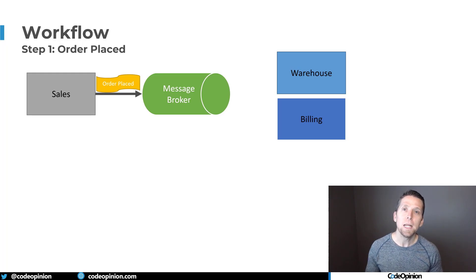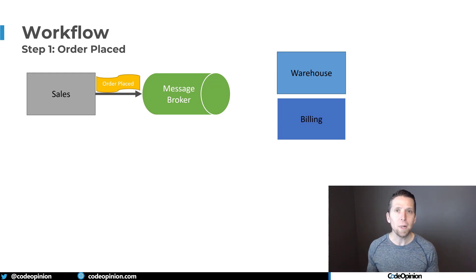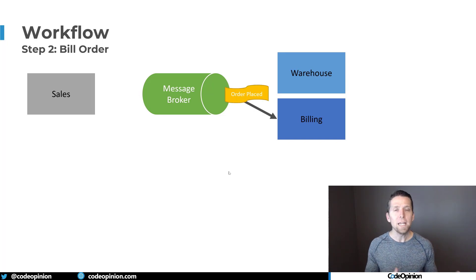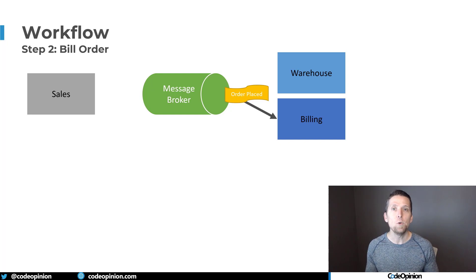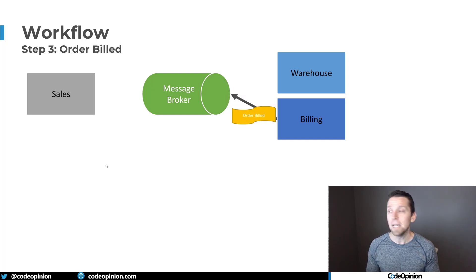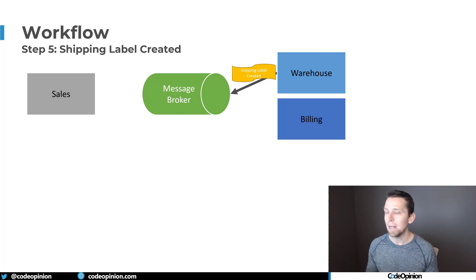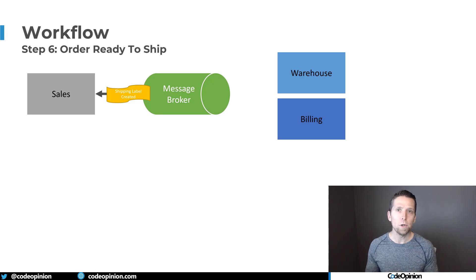The second practical example is long-running business processes and workflows. Going back to the sales example: when an order is placed, there are multiple different services involved in completing the entire life cycle — from being placed, to billed, to shipped. When sales accepts the order, it publishes an Order Placed event to a topic on the broker. Billing, as part of this workflow, consumes and subscribes to that event, invoices or charges the customer, and then publishes an Order Billed event. Warehouse then picks up that event, creates a shipping label, allocates products, and publishes a Shipping Label event. Sales picks that up to mark the order as ready to ship.